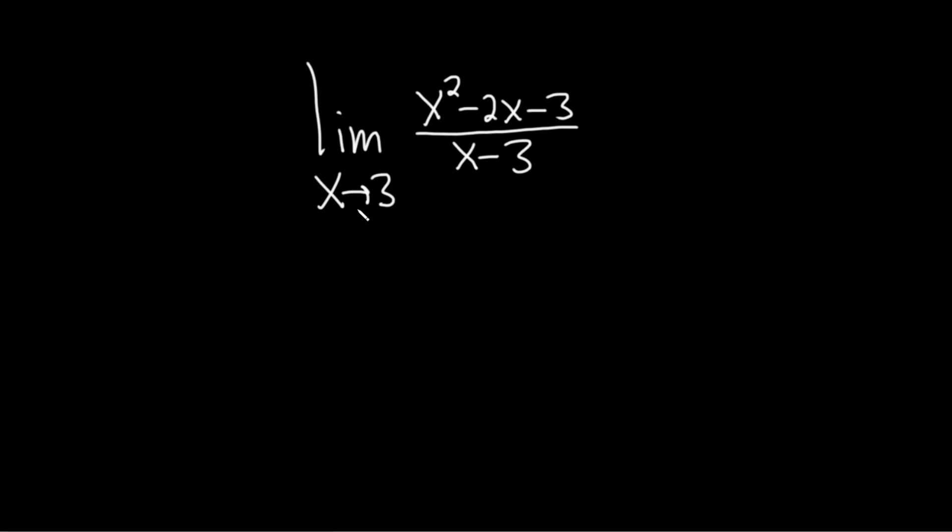So the first thing you want to do when evaluating limits is take this number and attempt to plug it in. If you do that, you end up with 3 minus 3 on the bottom. In other words, you end up with 0 on the bottom, which is really bad. You can't have 0 on the bottom.